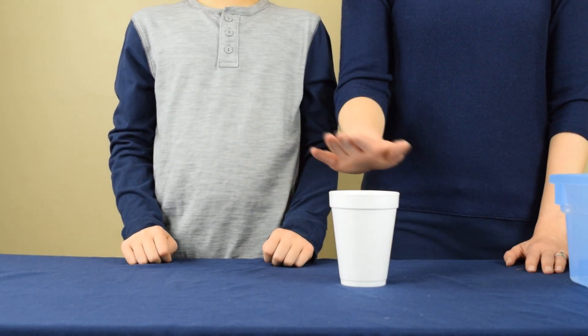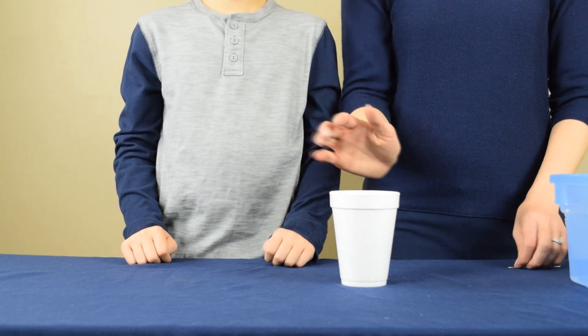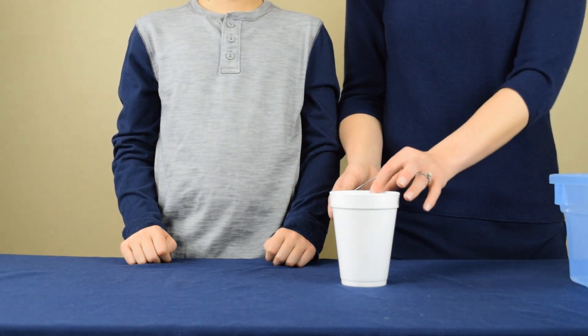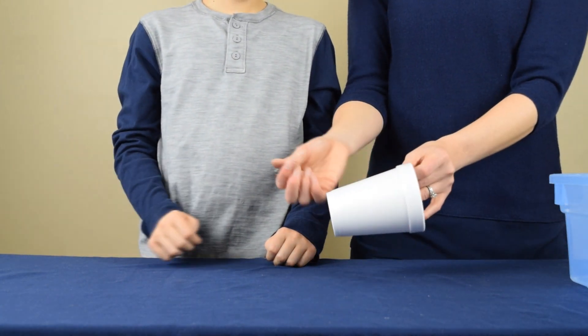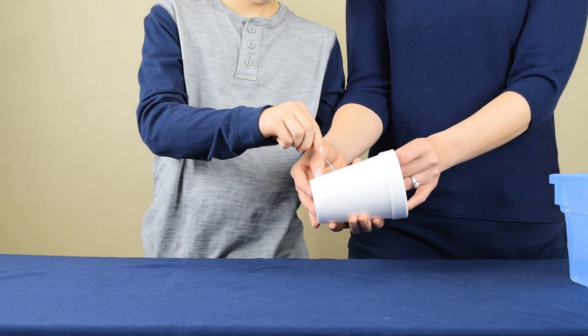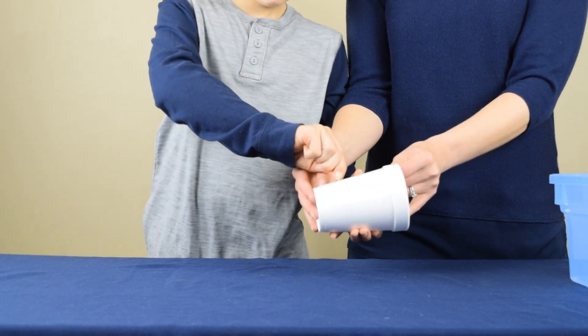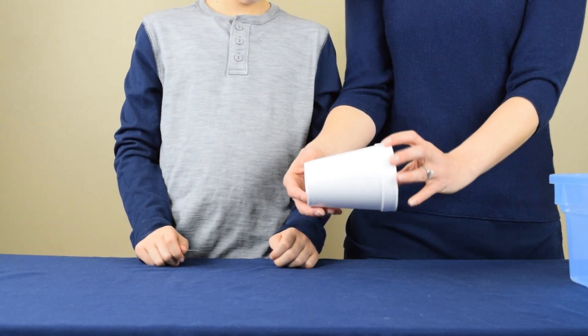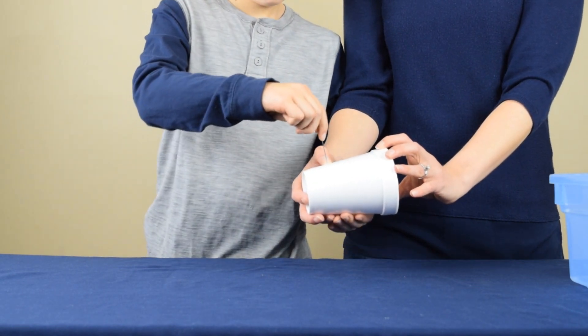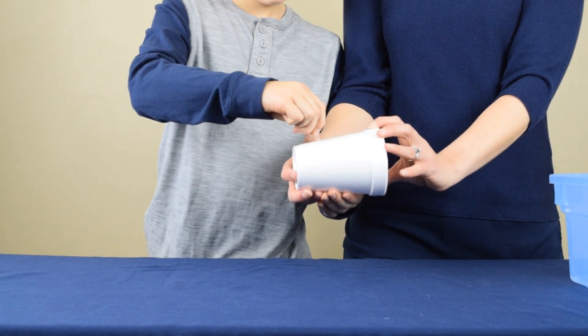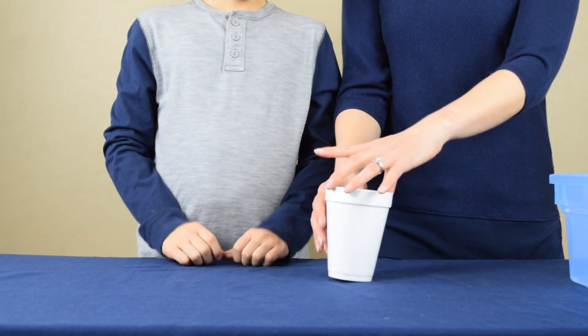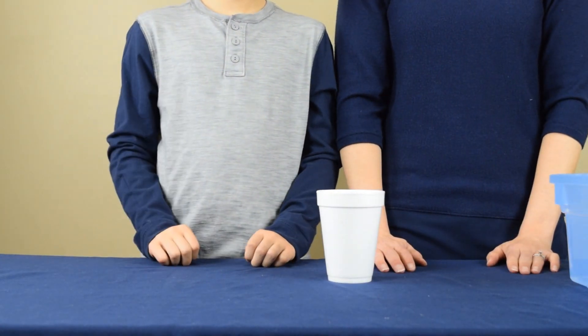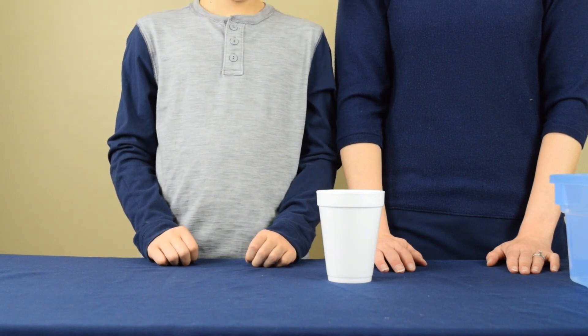To start the experiment, you need a styrofoam cup. We're going to use a paper clip to poke holes in the side of the cup. You could also use a push pin. You're going to poke one hole on one side of the cup, and it's going to be about a centimeter in diameter. Then you're going to turn the cup around and poke another hole. So now that the cup has two holes in it, we're ready to move to the next step.